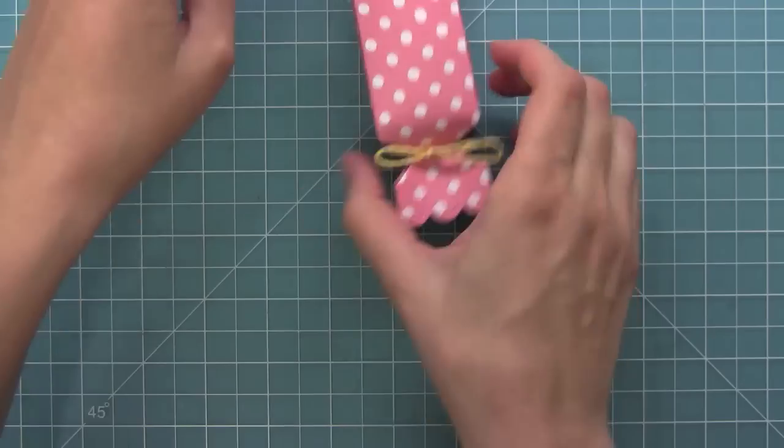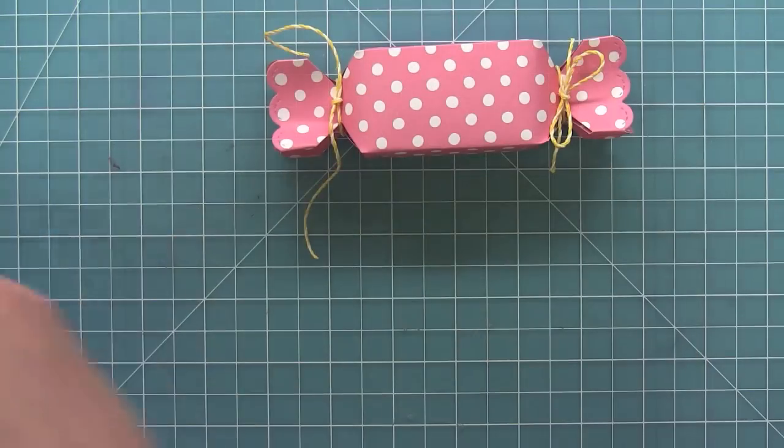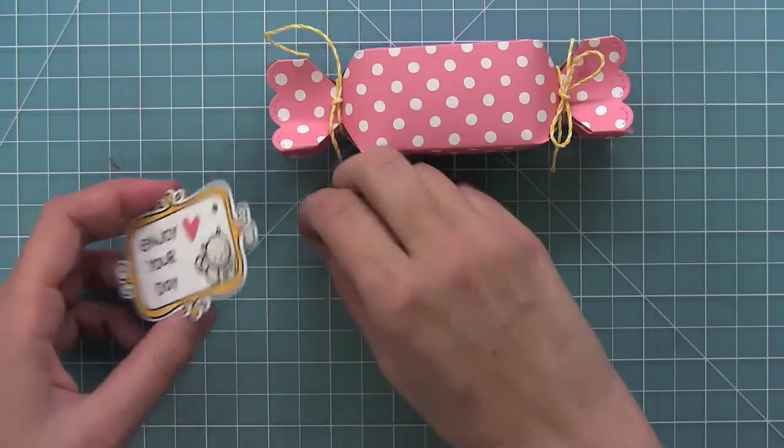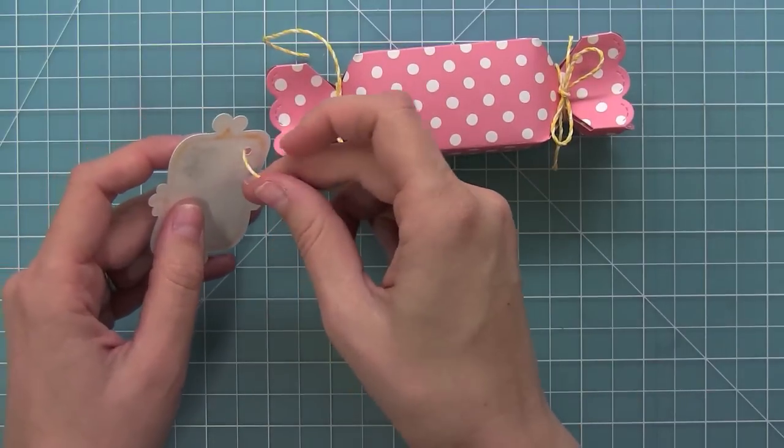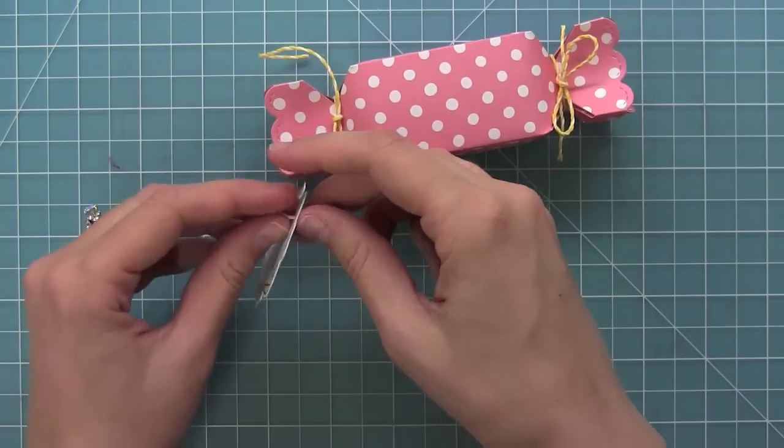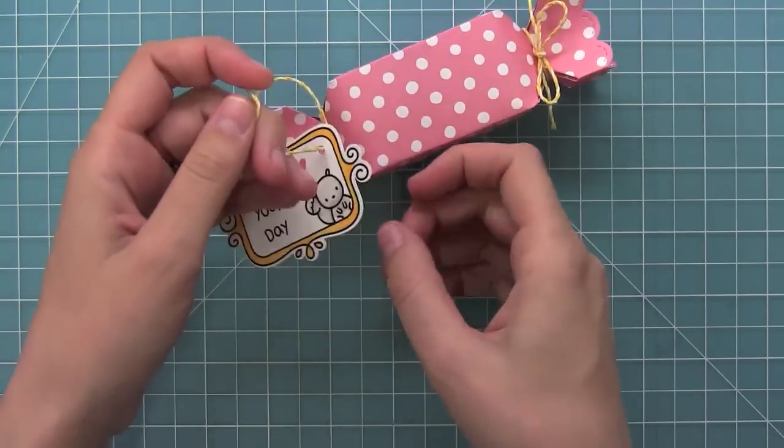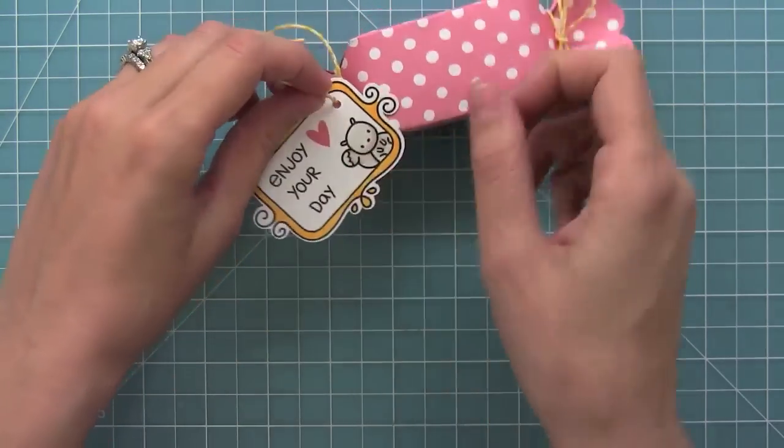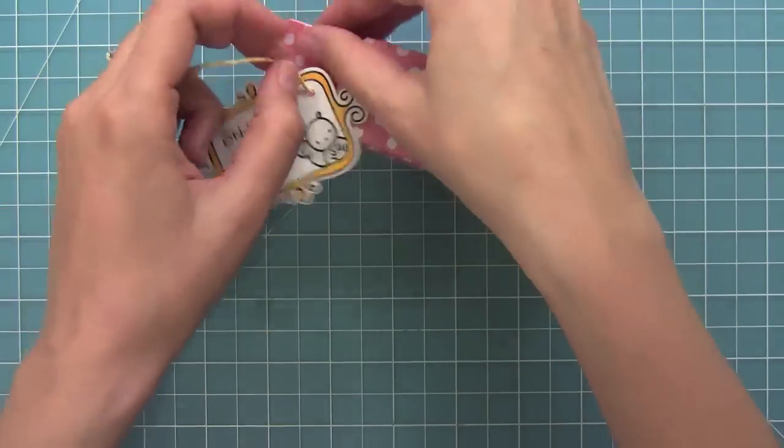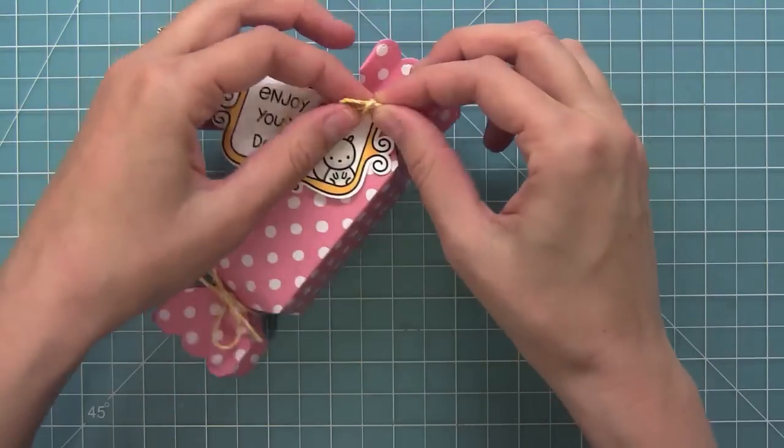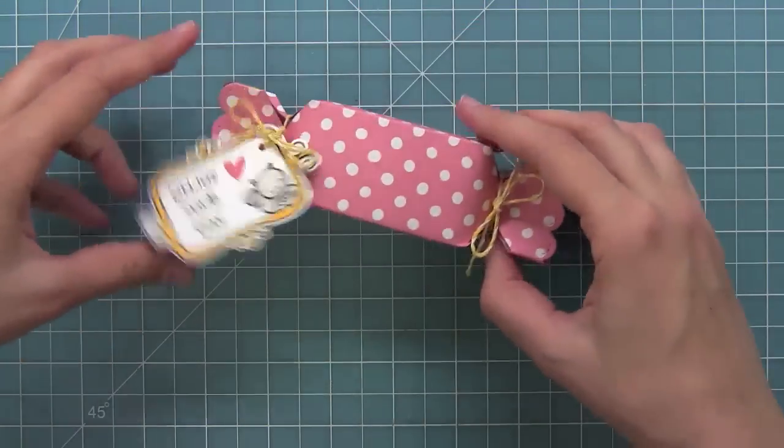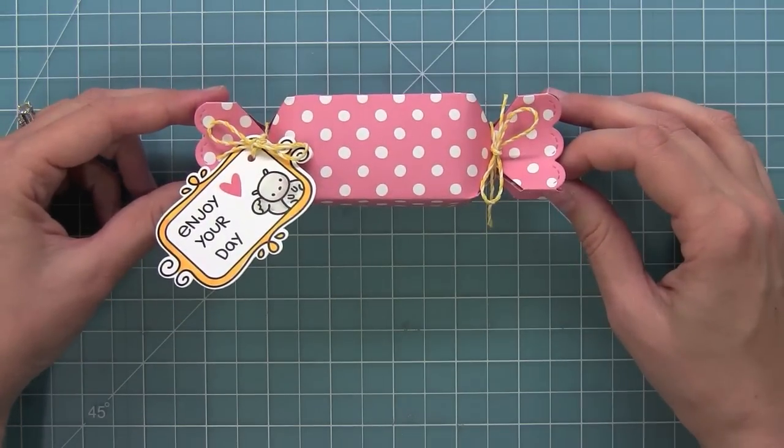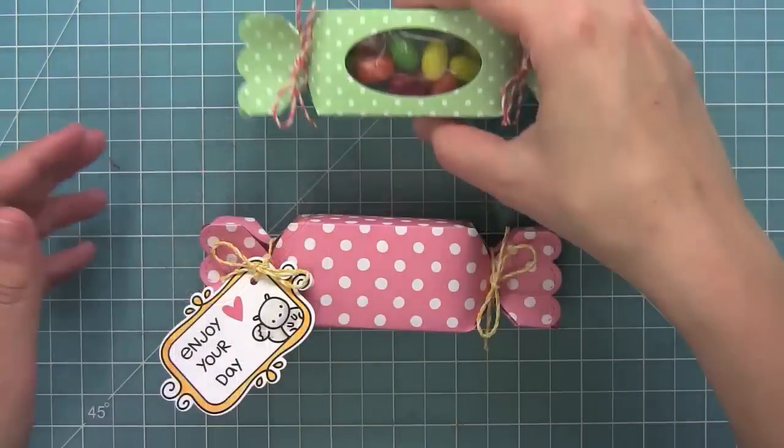I thought it would be fun to add a little tag to this using Fanciful Frames. I'll show you guys how to make this tag in another video. I think it's such a cute little tag, and these frames are just perfect for adding that little extra touch to these candy box gifts. I like to thread it through the twine there, tie a knot, and then tie a bow. You can see just how cute that turns out. I think this little gift would make anyone's day.